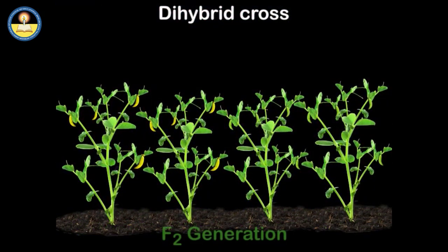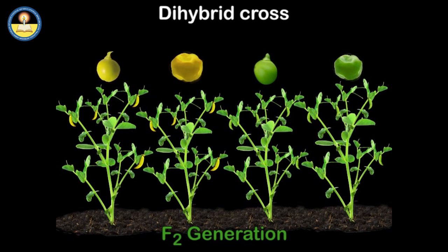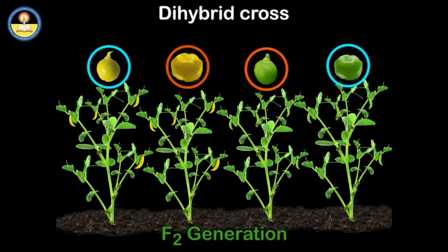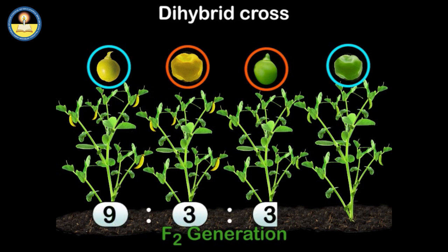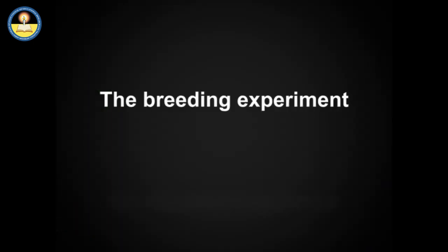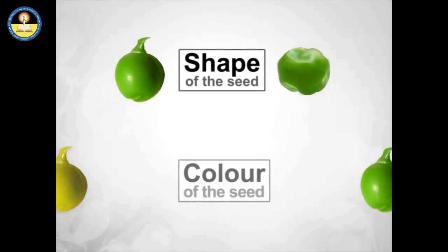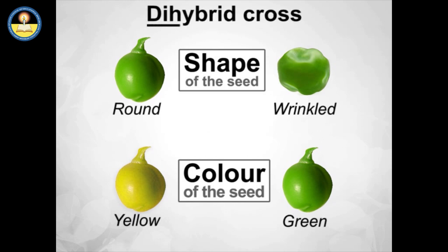In F2 generation, Mendel observed the appearance of four types of combinations. These included two parental types and two new combinations. The parental types were round-shaped yellow color and wrinkled shape green color. The two new combinations were round-shaped green color and wrinkled shape yellow color. The ratio of these phenotypes was 9:3:3:1. The breeding experiment dealing with two traits is called a dihybrid cross — for example, when both shape of the seed and color of the seed are considered.